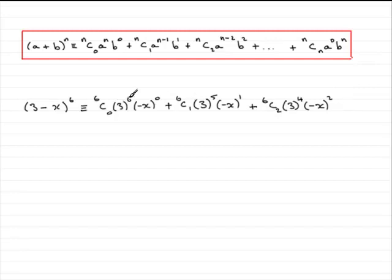Notice all the time, by the way, that the sum of your powers, 6 and 0 comes to 6, 5 and 1 is 6, 4 and 2 is 6. So that's always a valuable check. Don't forget also to put plus and so on on the end. There's more terms, even though we've got to write down the first three terms.